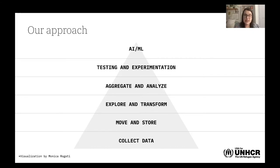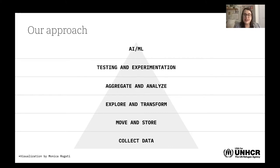So in 2018, we decided to really focus on the bottom three parts of the pyramid: collecting the data, moving and storing it to make it accessible, exploring and transforming it to understand different ways to look at the data, and aggregating and analyzing to understand what was in the data. We weren't yet touching testing and experimentation or AI and machine learning — the next chunk really focused on that bottom part.